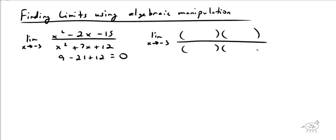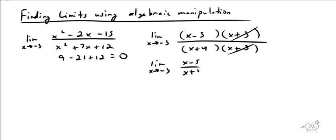We're going to factor, and hopefully that works. If it doesn't work, then we've got to figure something else out. So I factor the top and I get x minus five and x plus three, and the bottom gives me x plus four and x plus three. So you get the limit as x approaches negative three of x minus five over x plus four. Now I can do direct substitution: negative three minus five over negative three plus four gives me negative eight over one, which is negative eight. That's my answer.